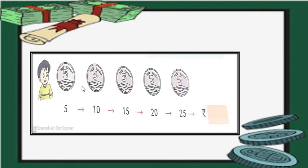Here you can see some 5 rupees coins. How many coins are there? 1, 2, 3, 4 and 5. These are five 5 rupees coins. So, what is the total value? Let us see. 5 plus 5, 10. 10 plus 5, 15. 15 plus 5, 20. 20 plus 5, 25. So, the total value is rupees 25.